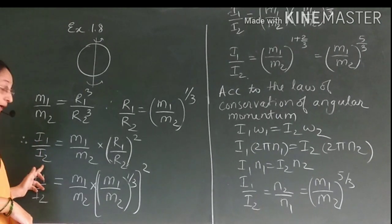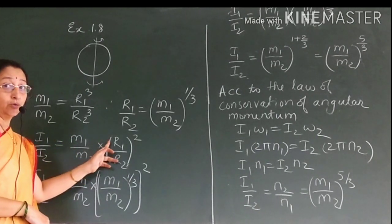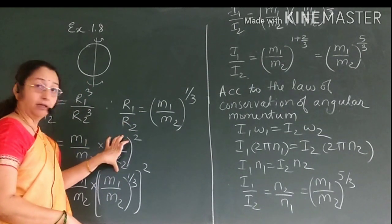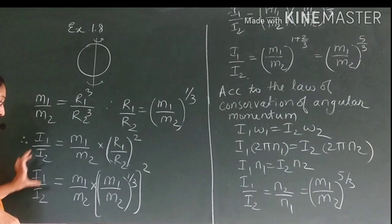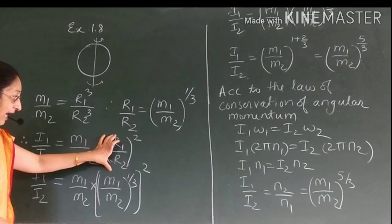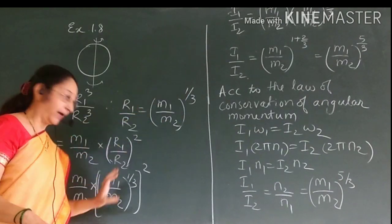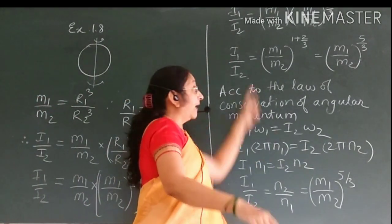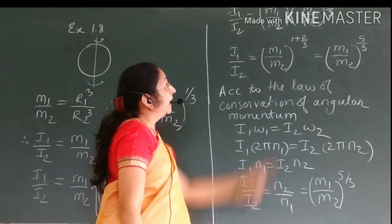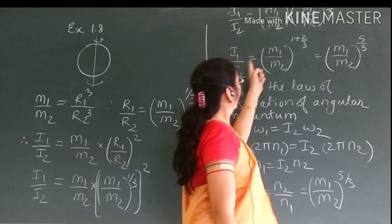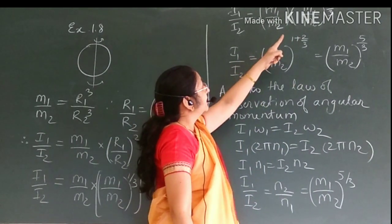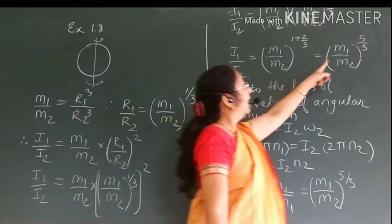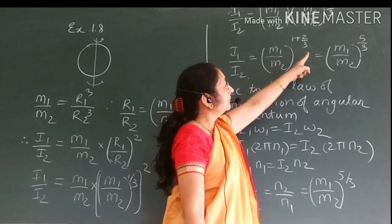Now, I1 upon I2 equals (m1/m2) times (r1/r2) squared. Substituting r1/r2 equals (m1/m2)^(1/3), we get I1 upon I2 equals (m1/m2) times (m1/m2)^(2/3). Adding the exponents, 1 plus 2/3 equals 5/3, so I1 upon I2 equals (m1/m2) to the power of 5/3.